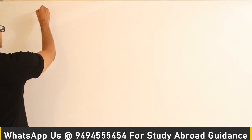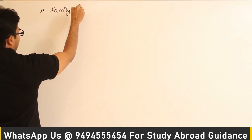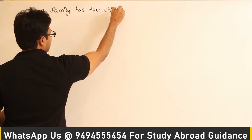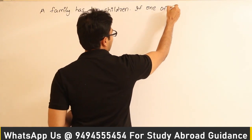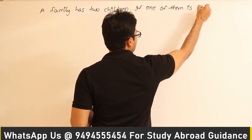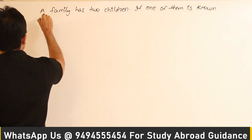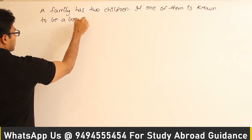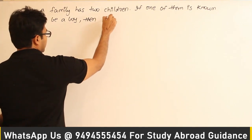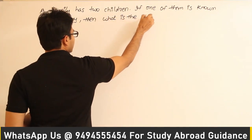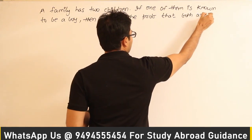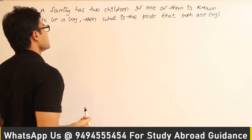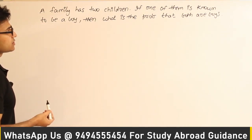Now, let's see a few more examples of conditional probability. Let us assume that, see this question: a family has two children. If one of them is known to be a boy, then what is the probability that both are boys? So, now it is again a conditional probability question. How do you identify whether it is a conditional probability question or not?